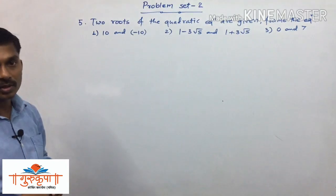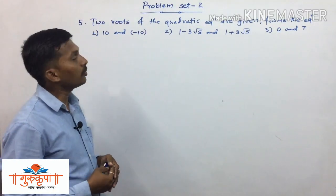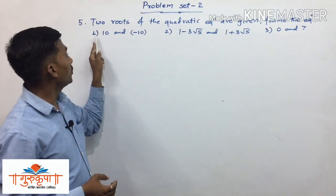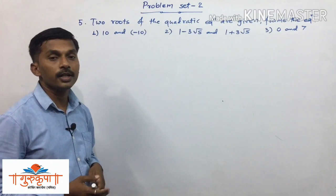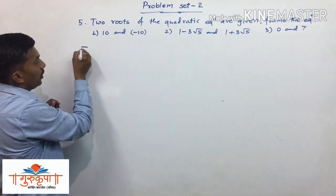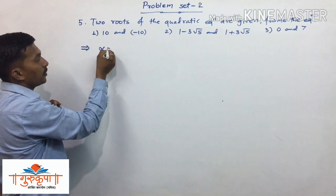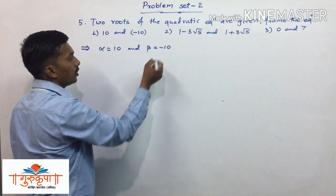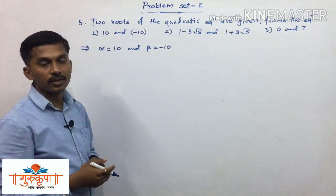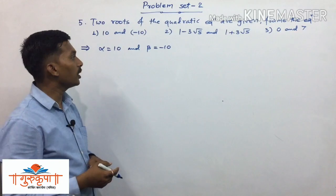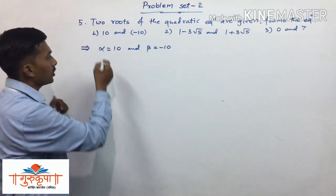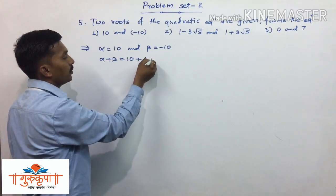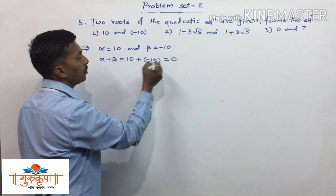We are given the two roots and have to find the quadratic equation. For the first example, the two roots are 10 and minus 10, so alpha equals 10 and beta equals minus 10. First we find alpha plus beta, which equals 10 plus minus 10, and that equals 0.